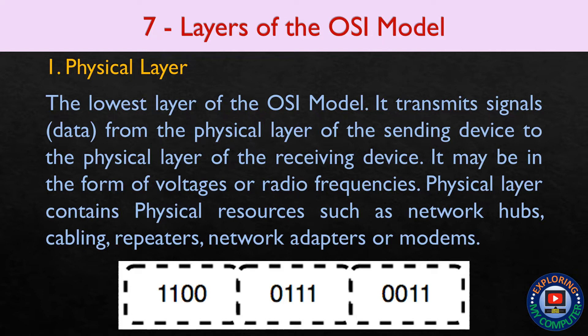Transmission may be in the form of voltages or radio frequencies. The physical layer contains physical resources such as network hubs, cabling, repeaters, network adapters, or modems.